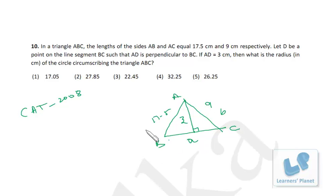Now what is the area of a triangle in terms of circumradius? It is ABC by 4R. And in other words, what is the area of triangle? Half base into altitude. So base is a and altitude is AD, that is 3. So a is cancelled, this is 2.